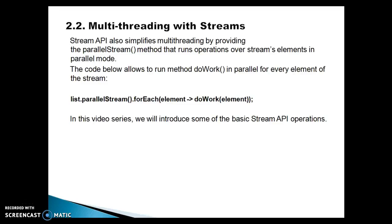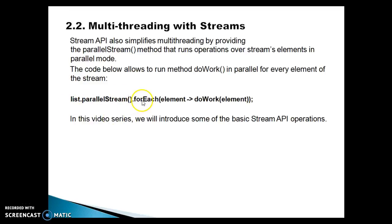Now, multi-threading with streams. The stream API also simplifies multi-threading by providing a parallel stream method that runs operations over stream elements in parallel mode. The code below allows you to run a method 'doWork' in parallel for every element of the stream. The collection interface also has a method called parallelStream. If you have a list object, you can call parallelStream on that, which returns the stream itself, and after that you can apply a forEach loop and pass every element to a method called doWork.